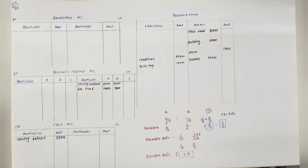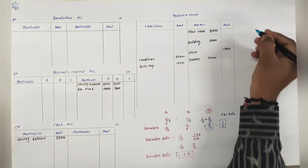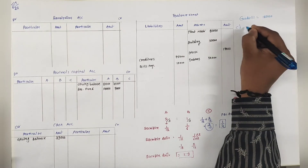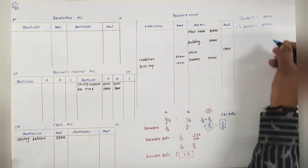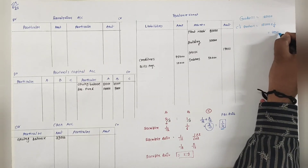Second: C will bring proportionate capital - कितनी capital ला रहा है, वो mention नहीं किया है, उसको last में find करना है. Number 3: C will bring his share of goodwill in cash. Firm की total goodwill is equal to 1,80,000. C's goodwill = 1,80,000 into 1/4 = 45,000.